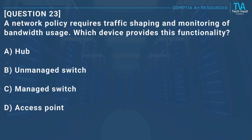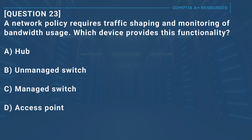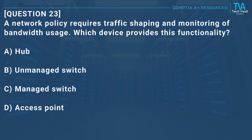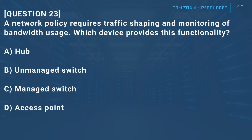Question 23: A network policy requires traffic shaping and monitoring of bandwidth usage. Which device provides this functionality? A, hub. B, unmanaged switch. C, managed switch. D, access point.